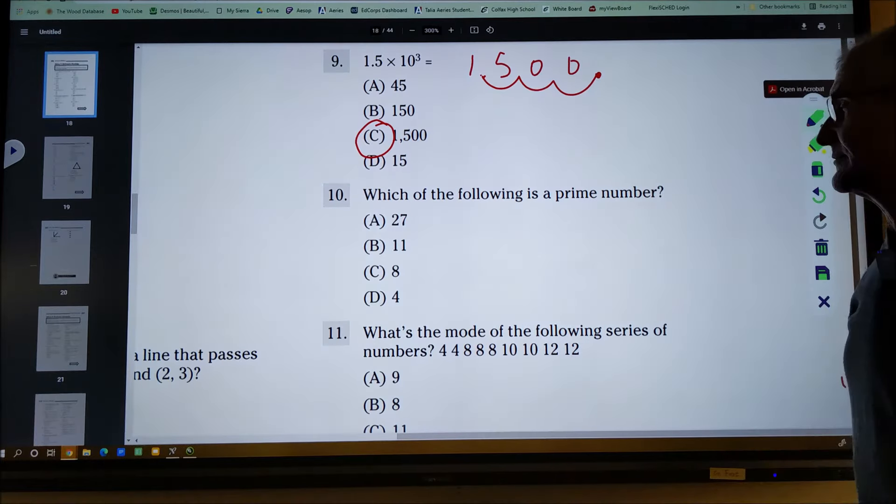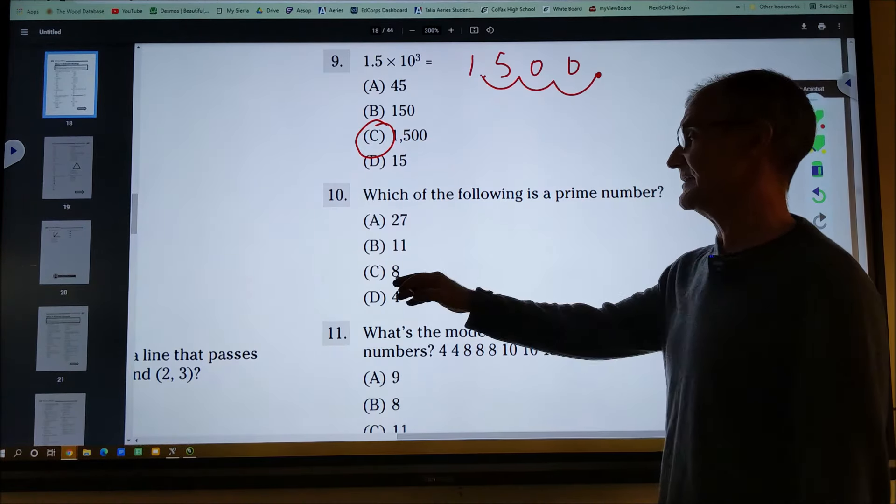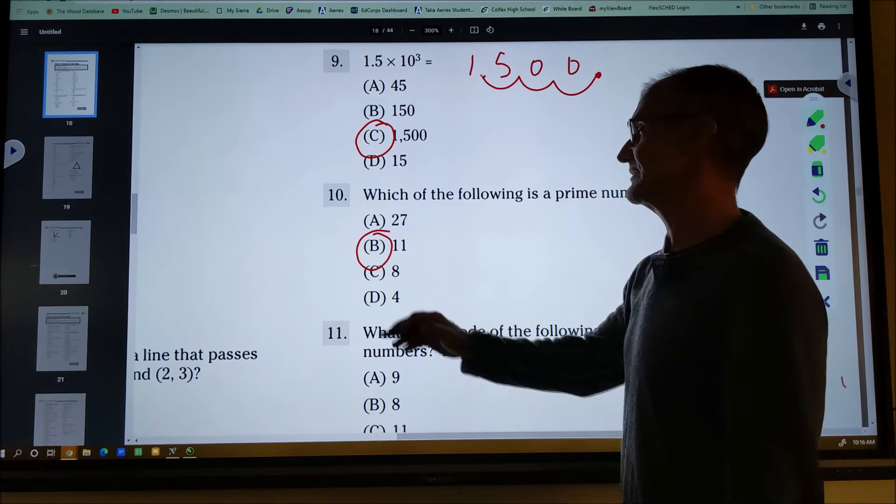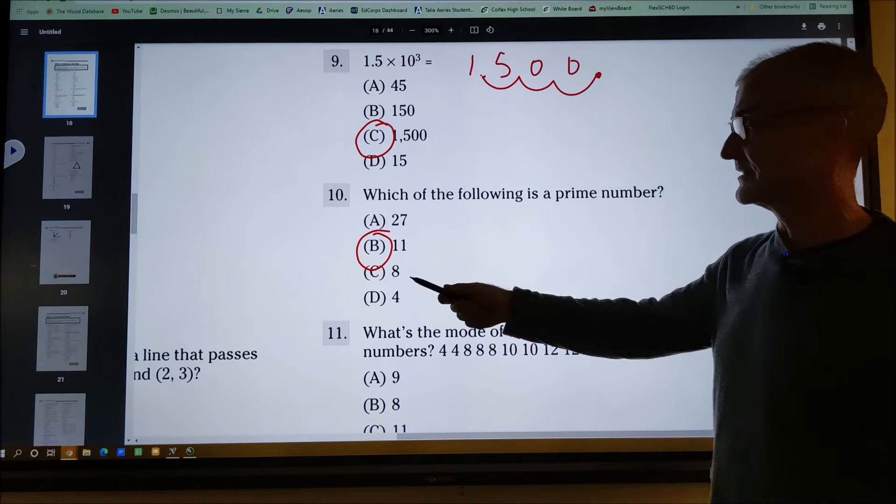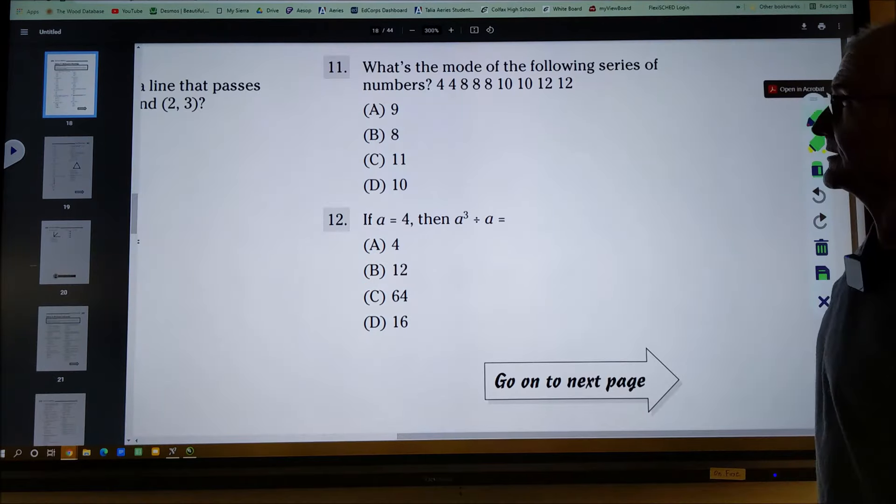Which of the following is a prime number? 27 could be divisible by 3, 8 divisible by 2, 4 divisible by 2. So 11 is the prime. Again, kind of a vocab problem, but nothing will go into 11 and that's why it's a prime number.